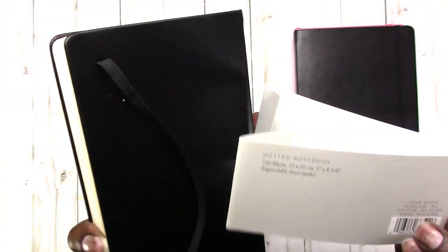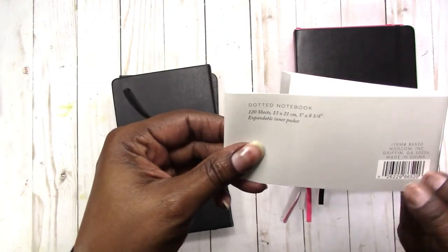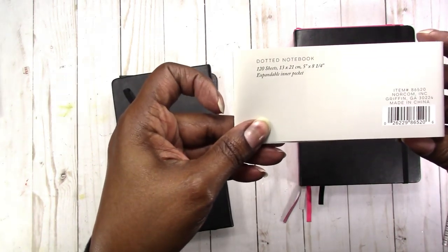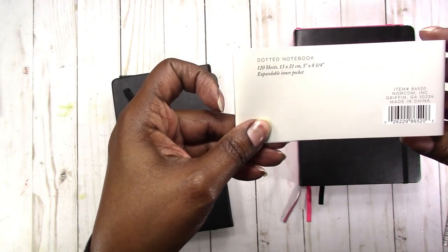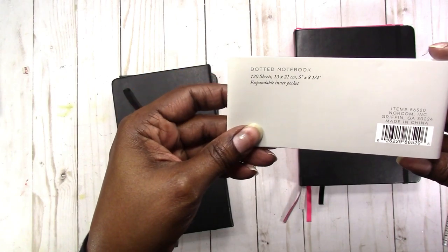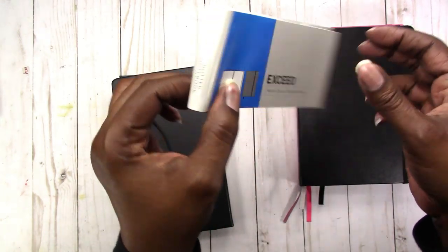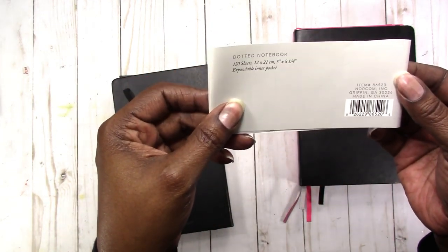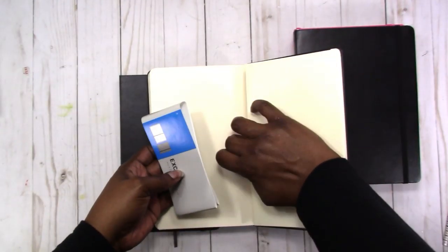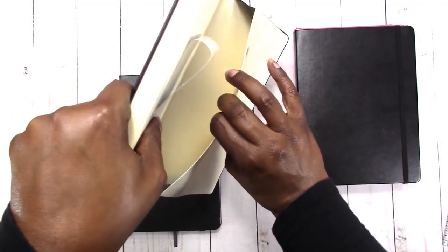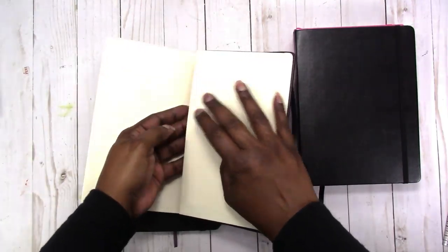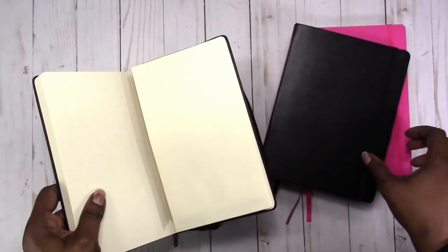It's five by eight and a quarter, 120 sheets, and it's Exceed. Of course I got the dotted. It does have the pocket in the back. You can see here, again, it has this creamy colored paper. I think this is even more yellowish or creamier than the Leuchtturm.